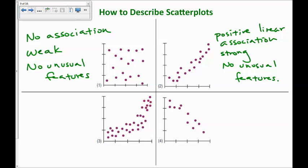In number three, it's positive. It's going up. It is curved. I don't know if you see a slight bend to the data. However, it is, I would say, a strong association. It's a very clear curve. I don't see any unusual features.